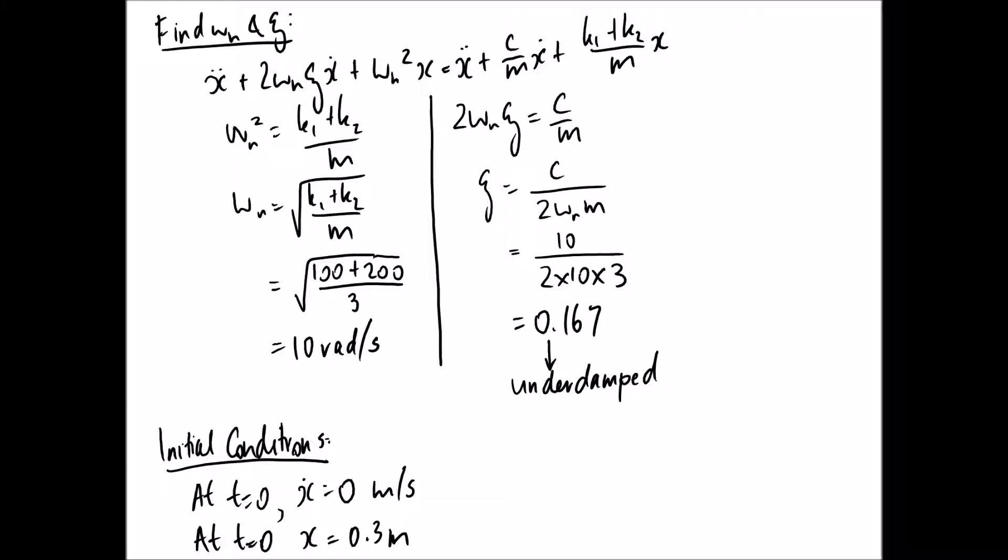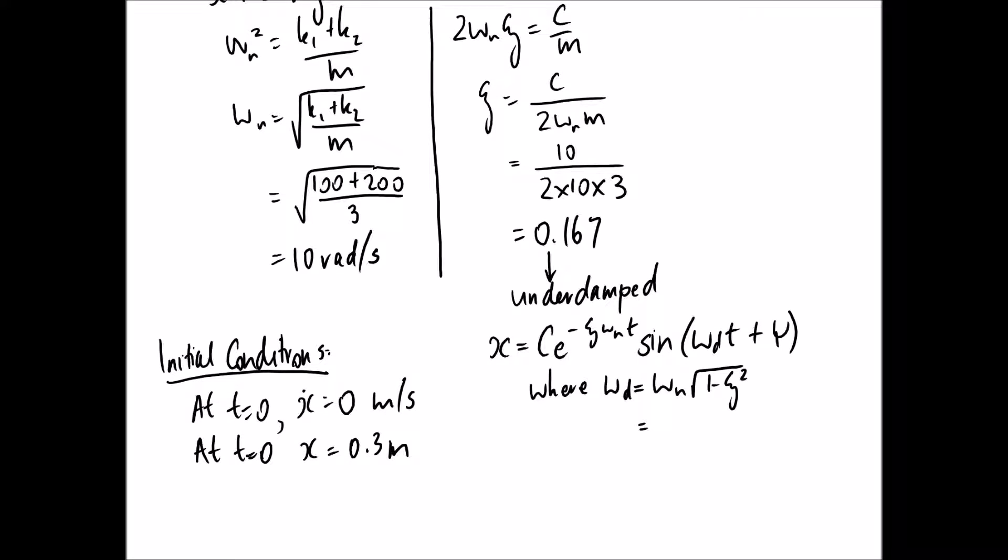So this time we're going to be solving a different equation for x as a function of time based on that. The general form for this type of situation is x equals c e to the negative zeta omega n t multiplied by sine omega d t plus psi. Our two unknowns or constants that we need to solve for are c and psi, but we need to also determine what omega d is. So omega d is equal to omega n square root 1 minus zeta squared. Substituting in, we know omega n and zeta. So it becomes 10, 1 minus 0.167 squared, and we end up with a value of 9.86 radians per second.